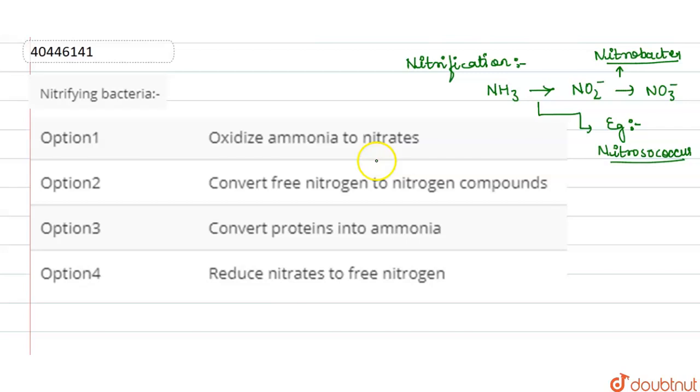If we look at the options here, the first option is that they oxidize ammonia to nitrate, which is correct. Ammonia to nitrate by nitrifying bacteria - this is correct.